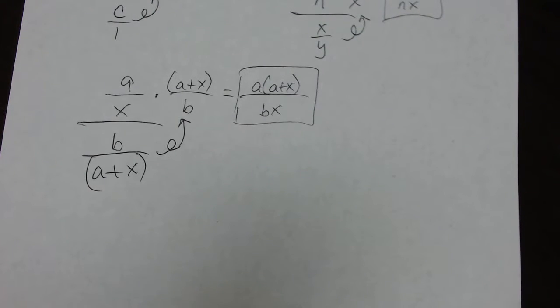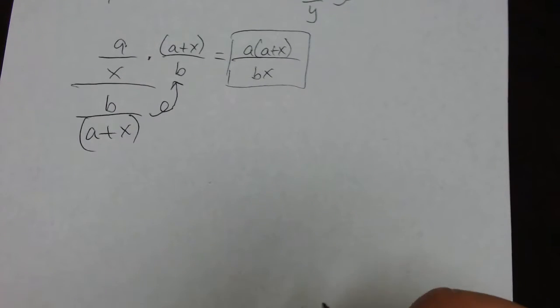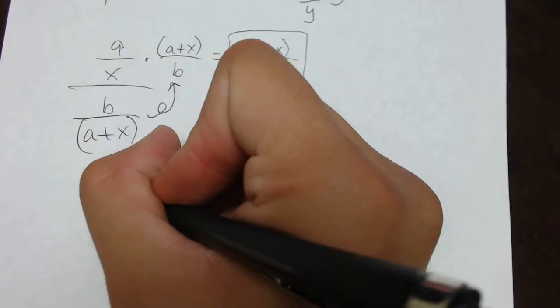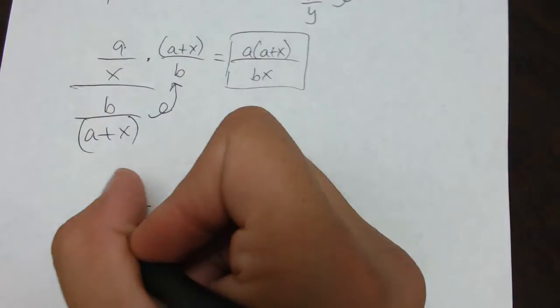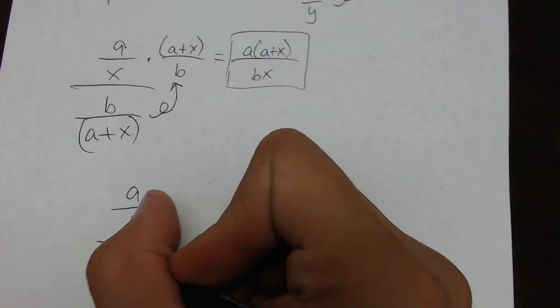And this is called the denominator, numerator, same quantity rule. Essentially, it's multiplying by 1. So, let's say we had A over B, we'll do one of our previous examples, over C over 1.